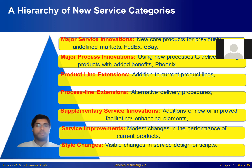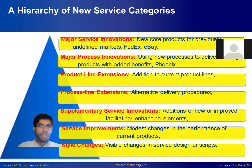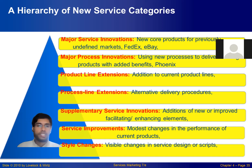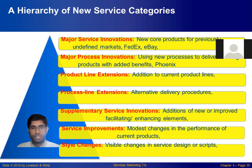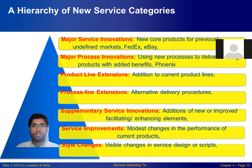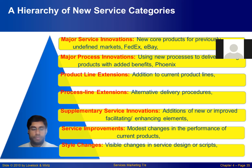So the billing result is online. Number 4 is process line extension. Number 5 is an alternative delivery procedure.